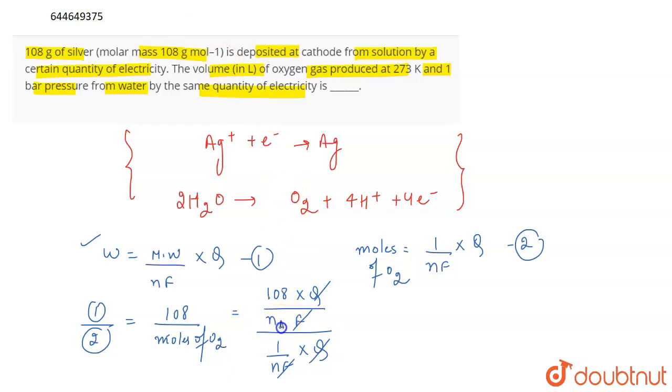So, this N belongs to Ag and the N which is written below belongs to O2. This belongs to O2.